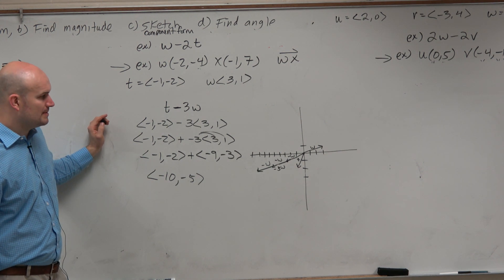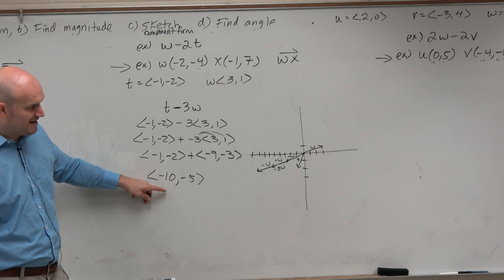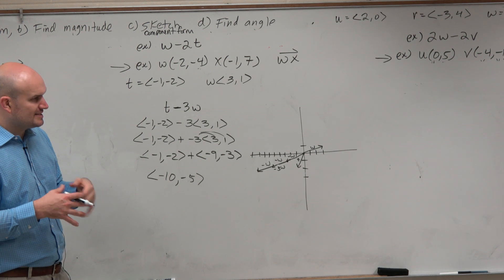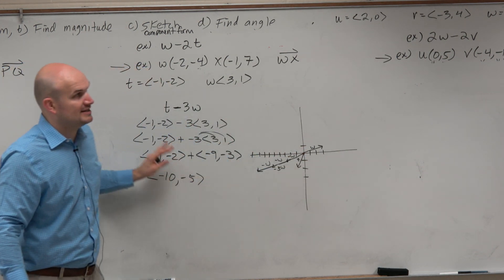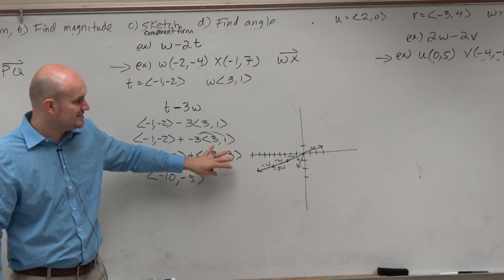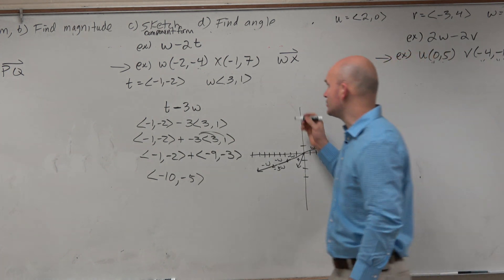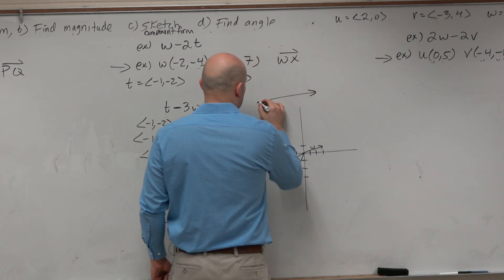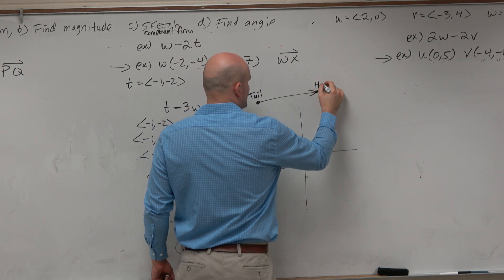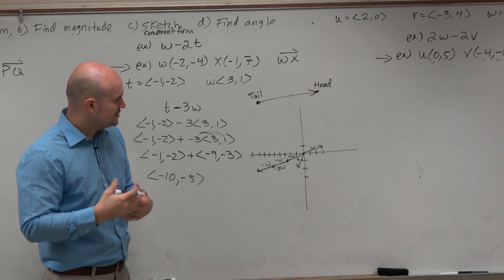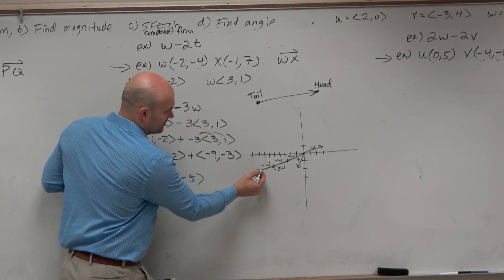Now we need to figure out what the resultant vector is. The resultant vector we know is negative 10, negative 5, right? We could just go ahead and graph that. But one thing I wanted to show you is how we get to that resultant vector using what we call the tail-to-end method. When you're graphing a vector, here is the tail and here is the head. All you need to do is take the tail and head of one of the vectors and put it to the other vector.